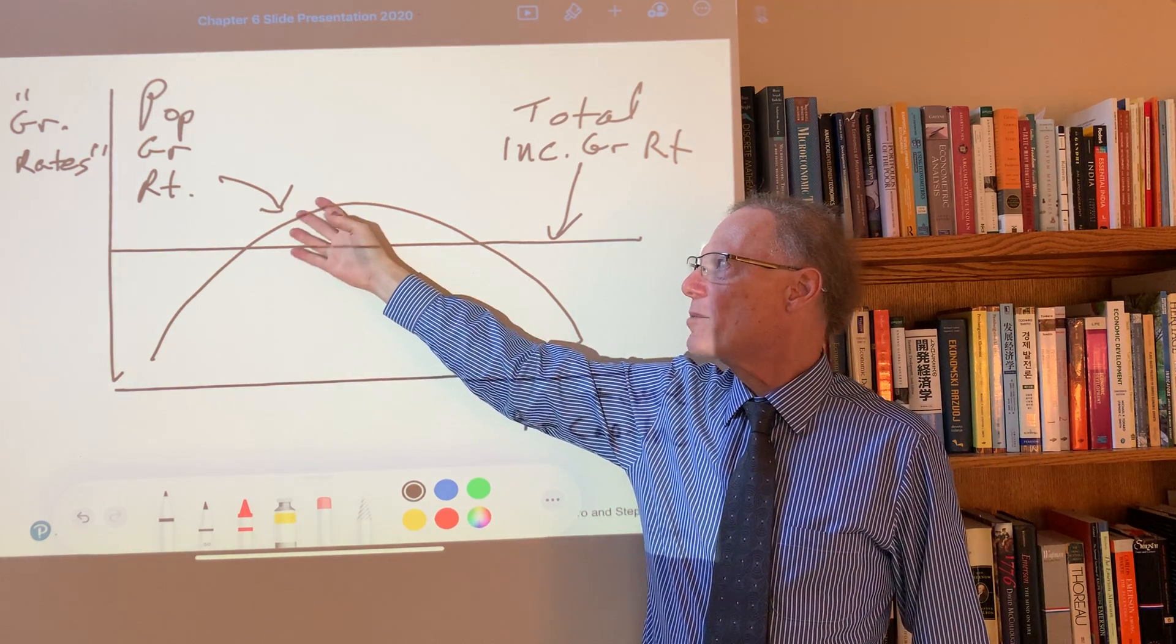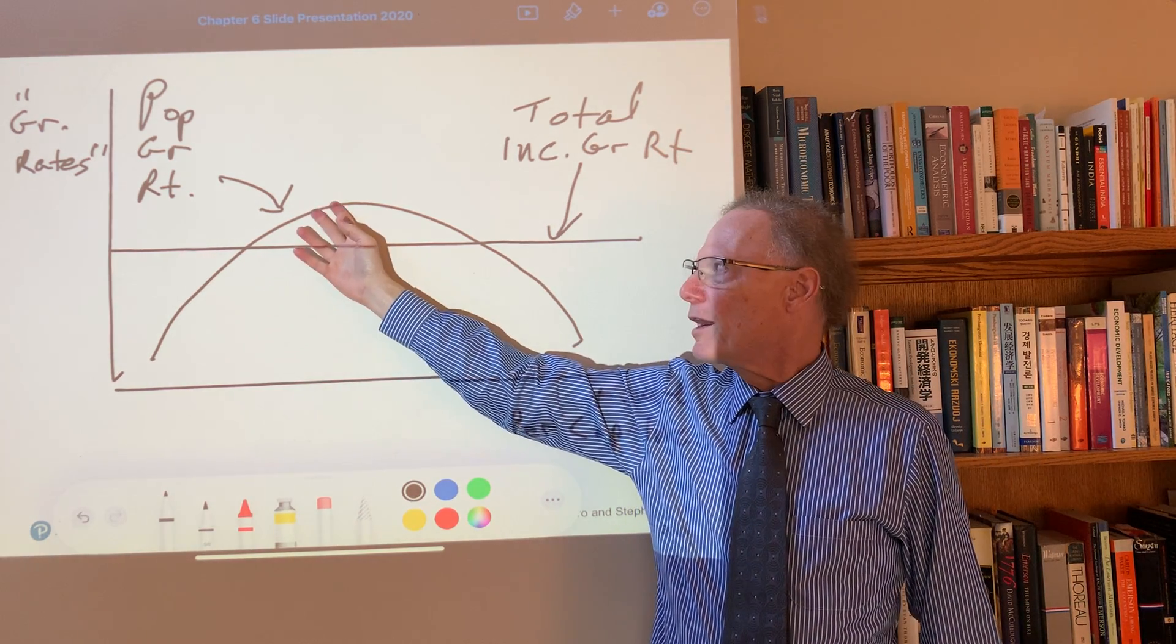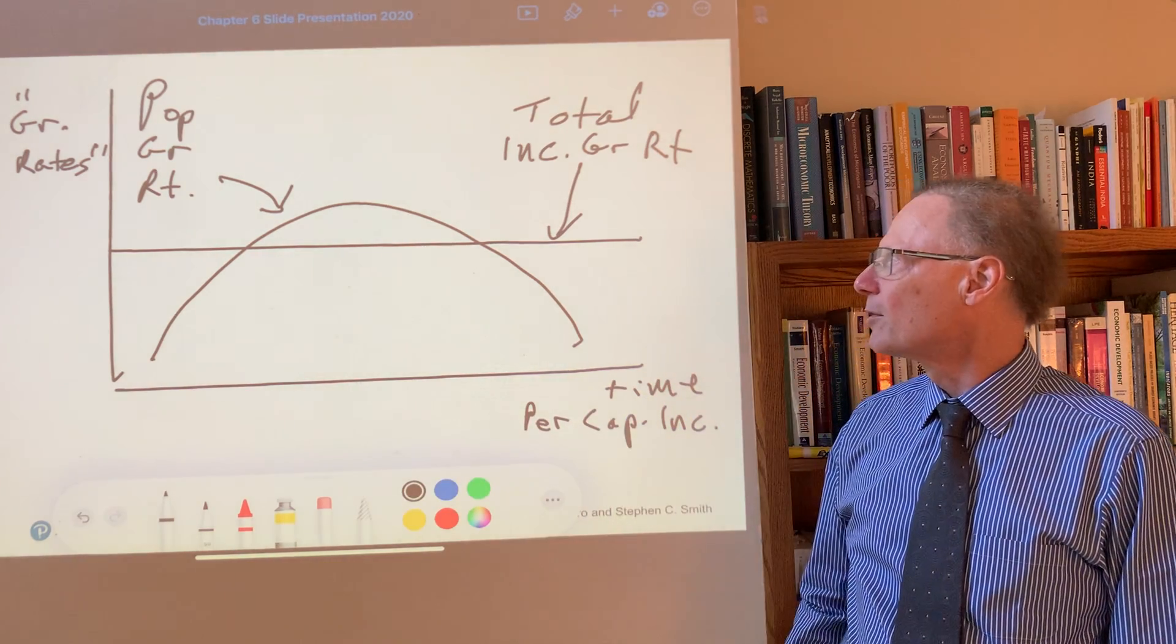Because the key fact is that population growth rate in this range is rising as per capita income rises.